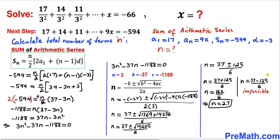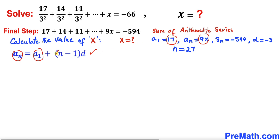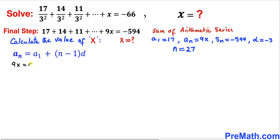The other case gives a negative value, so we reject it. Now let's calculate the value of x using the nth term formula: aₙ equals a₁ plus (n minus 1) times d, where aₙ is 9x, a₁ is 17, n is 27, and d is negative 3. So 9x equals 17 plus (27 minus 1) times negative 3.